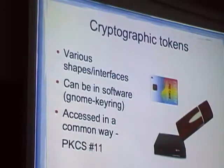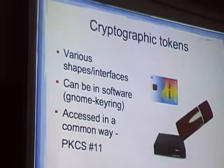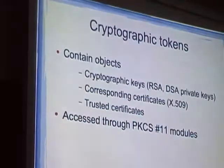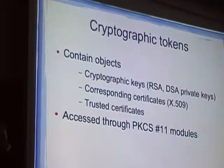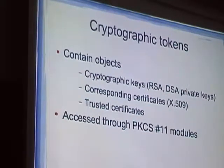There can also be software tokens. Gnome Keyring is a security module that is pure software, and all of these tokens can be accessed in a common way via the API. What do they contain? They can contain cryptographic keys, the corresponding certificates, and probably a list of trusted certificates — stuff that you can use to authenticate yourself to some site or some other party.